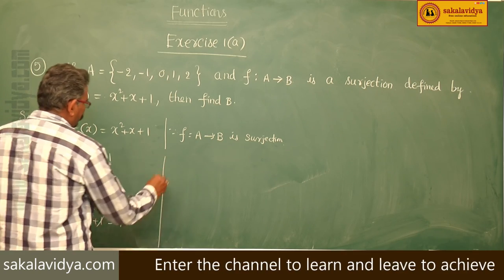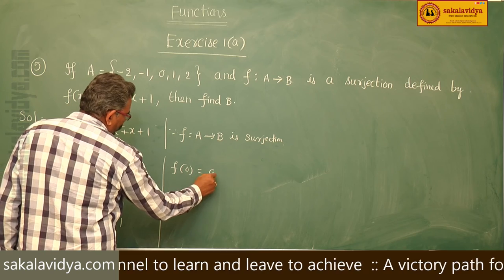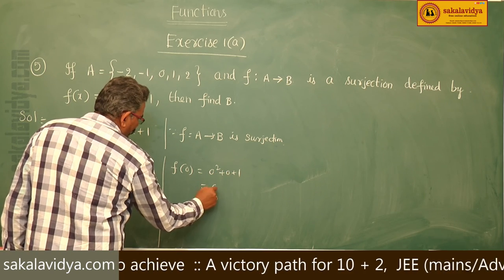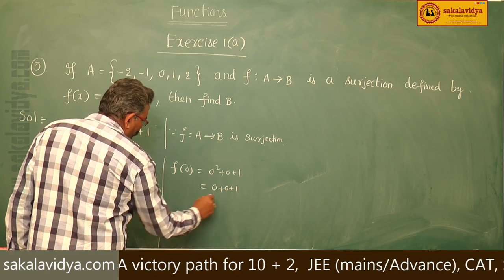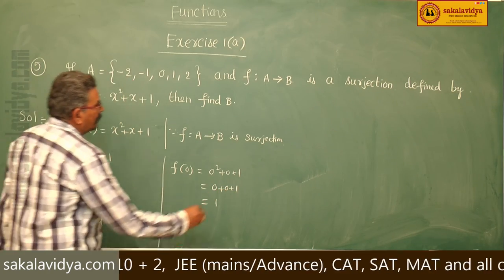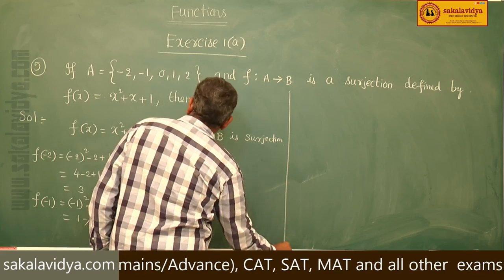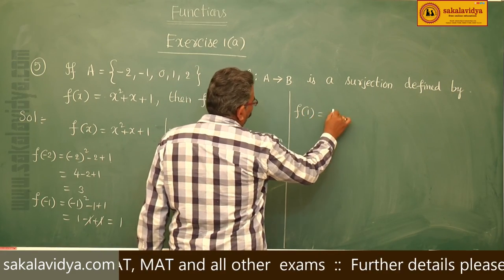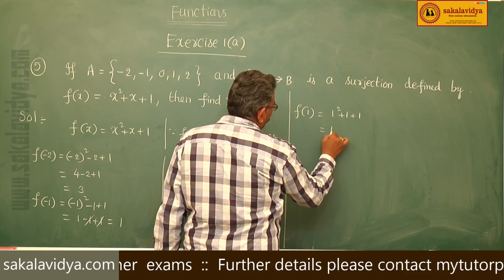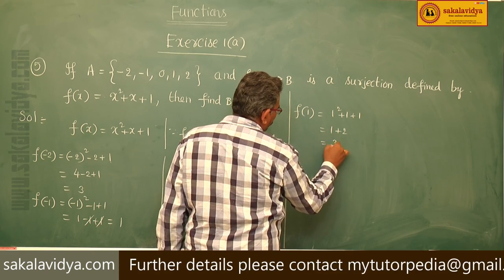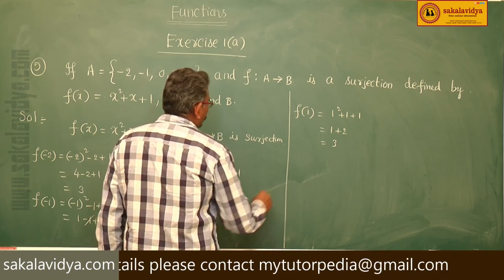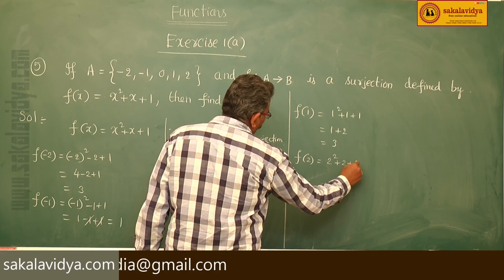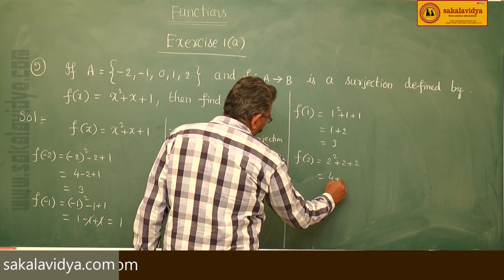f(0) = 0² + 0 + 1 = 1. f(1) = 1² + 1 + 1 = 3. f(2) = 2² + 2 + 1 = 4 + 2 + 1 = 7. Wait — f(2) = 4 + 2 + 2 = 8.